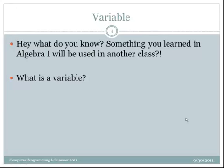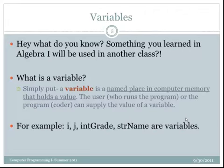Remember you learned about variables in algebra. Well, what is a variable? Basically, a variable is a named place in the computer's memory that holds a value. The user who's going to actually be running the program or the programmer that's coding can supply the value of that variable.